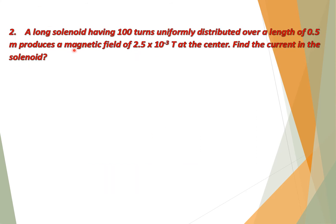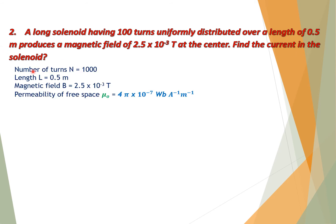Numerical question 2: A long solenoid having 1000 turns uniformly distributed over a length of 0.5 meter produces a magnetic field of 2.5×10⁻³ tesla at the center. Find the current in the solenoid. Given: N = 1000 turns, L = 0.5 m, B = 2.5×10⁻³ T, μ₀ = 4π×10⁻⁷ Wb/A·m.